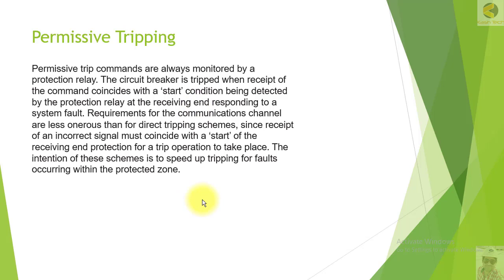Requirements for the communication channel are less important than for direct tripping schemes, since receipt of an incorrect signal must coincide with the start of the receiving end protection for a trip operation to take place. The intention of these schemes is to speed up tripping for faults occurring within the protected zone.